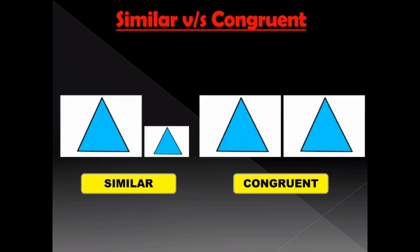Here is our next example. We can see a pair of similar triangles on the left and a pair of congruent triangles on the right of the screen. So it is very clear that congruent figures have the same shape and the same size, whereas similar figures have only the same shape.